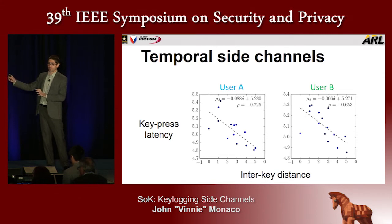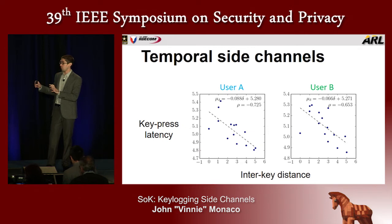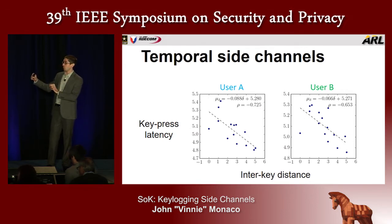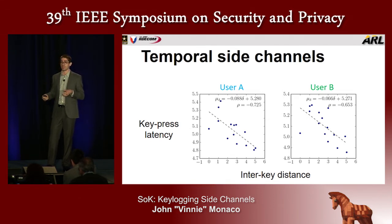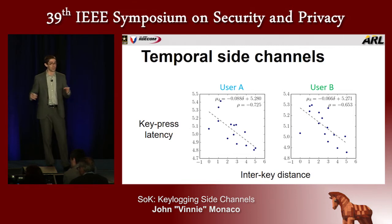A temporal keylogging side channel leverages only the timing of a keystroke — typically either the key press or key release timing — to determine what the user types. This is generally possible due to two factors. First, there's a temporal dependence on what was typed: looking at key press latency (the time between successive key presses) versus inter-key distance (the physical distance between keys on the keyboard), we see that keys far apart are actually pressed in quicker succession than keys close together. This is because the typist, especially a touch typist, can process keys far apart in parallel with alternate hands and fingers.